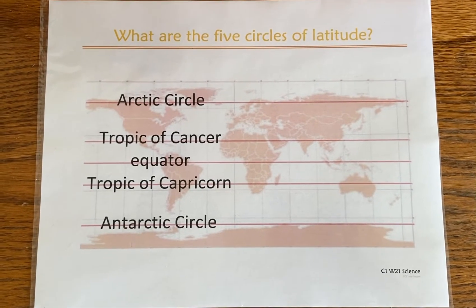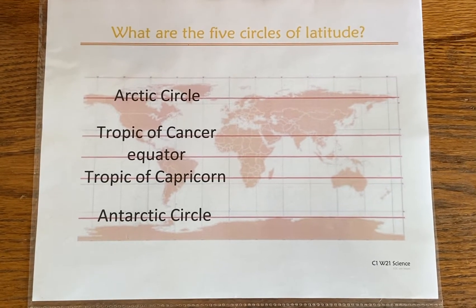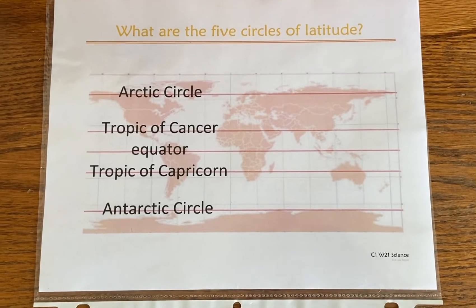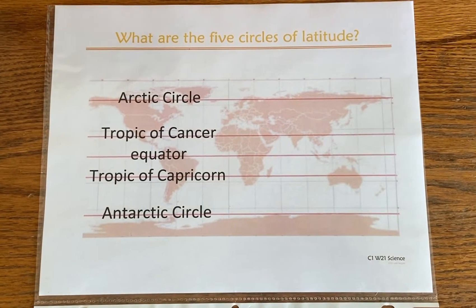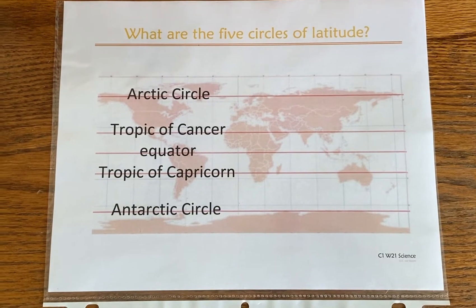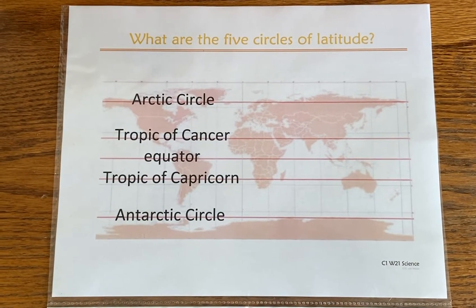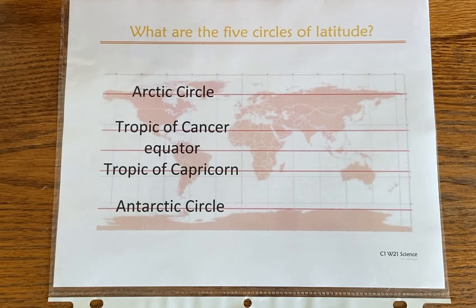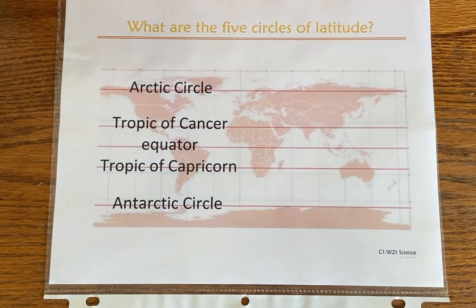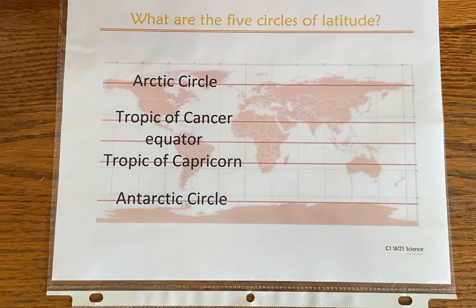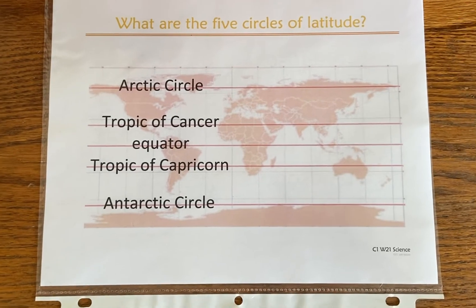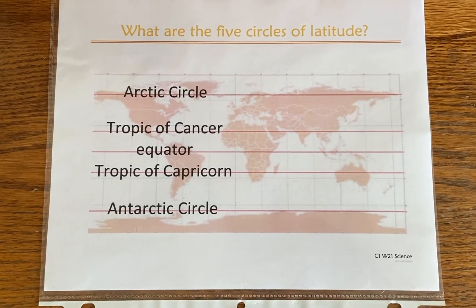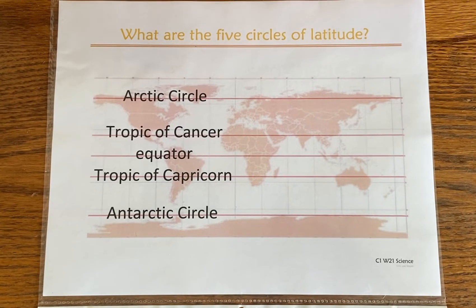CC Cycle One, Week 21 Science: What are the five circles of latitude? Sung to 'She'll Be Coming 'Round the Mountain.' The children can be making circles with their arms, or linking arms and going in a circle — something to reinforce the concept of a circle.